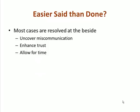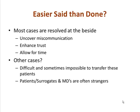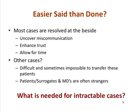If transfer is not possible, the intervention need not be offered. Easier said than done. Most cases are resolved at the bedside, albeit sometimes after a long period of time. Sometimes we do get consensus, but it takes a very long time. We have to uncover miscommunications, enhance trust, and sometimes allow for time — though four or five months may not be the answer. Other cases are difficult and sometimes impossible to transfer. Patients, surrogates, and doctors are often strangers without long-lasting relationships that enhance trust.